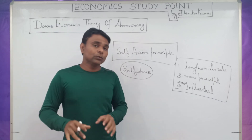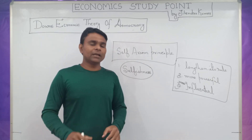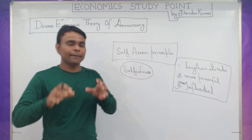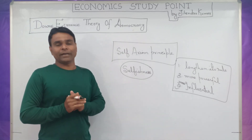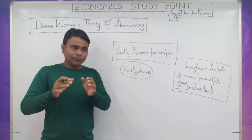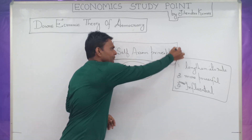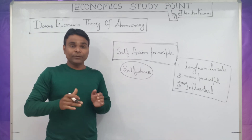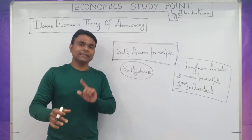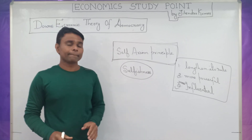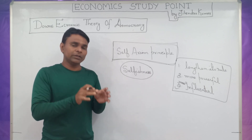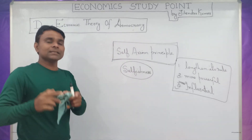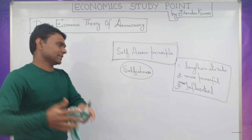According to Anthony Downs, the ruling party tries to maximize votes to win the election — this is the basic hypothesis of Downs' Economic Theory of Democracy. Citizens, by pursuing the self-adjunct principle, will support that political party which they feel will follow policy in line with their preference. Public policy in Downs' Economic Theory of Democracy is referred to as budgetary policy, that is the expenditure policy and the taxation policy.